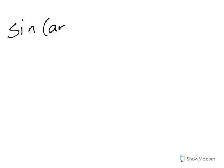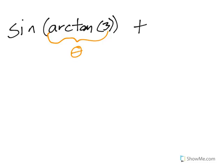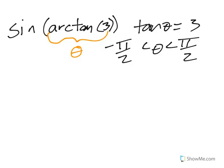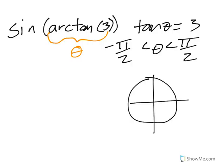The next one is sine of arctan of 3. You might get excited seeing 3 as a special tangent value, but no — it's square root of 3 that comes from tangent with special angles. So this isn't special. We have some angle whose tangent is 3, between negative pi halves and pi halves. The slope is positive 3, so we're in the first quadrant, but it's not a special angle — we need a right triangle.